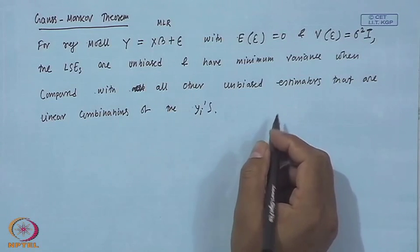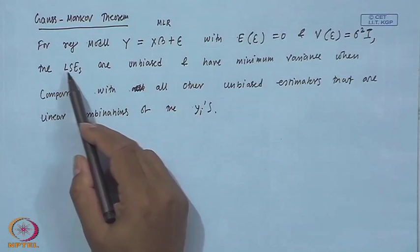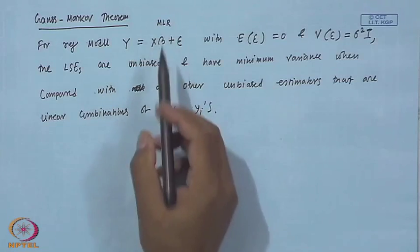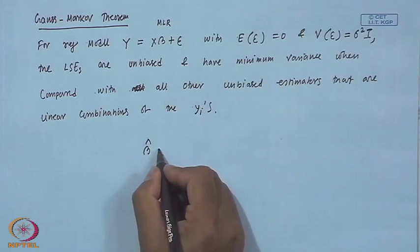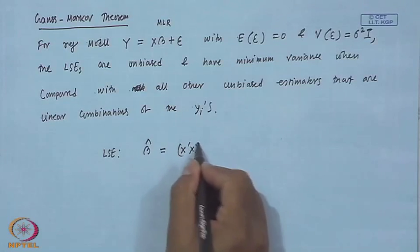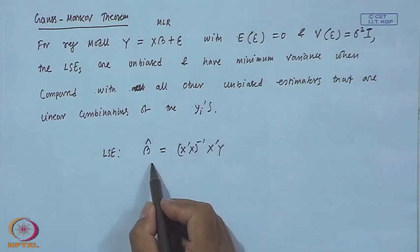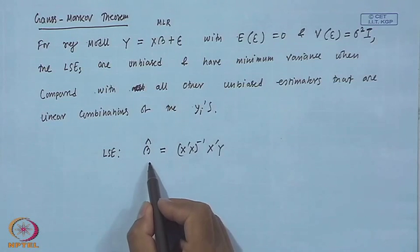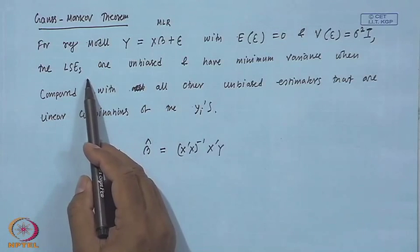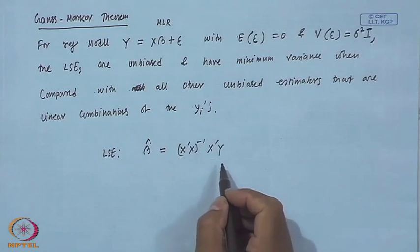The Gauss-Markov theorem says that for the multiple linear regression model satisfying the basic assumptions, we apply ordinary least square and the estimate β̂ = (X'X)⁻¹X'y. This estimator is unbiased and has the minimum variance compared to all other unbiased estimators which are linear in y.